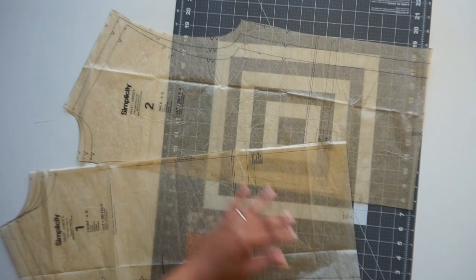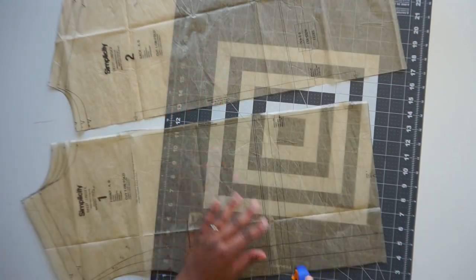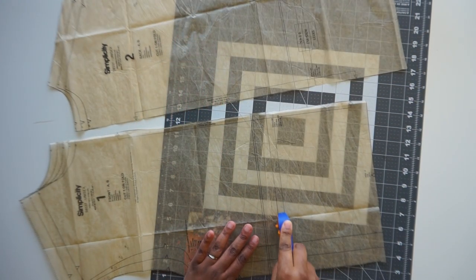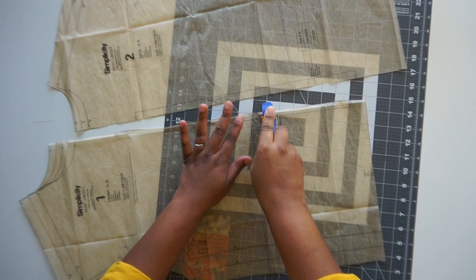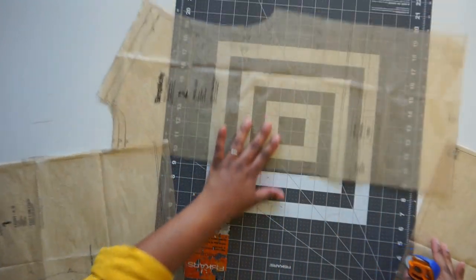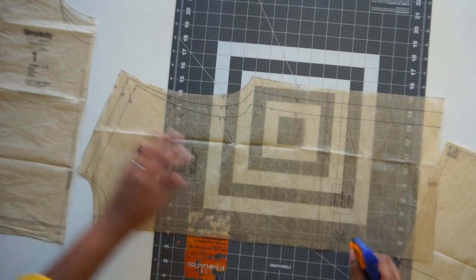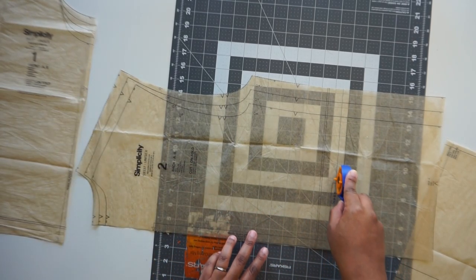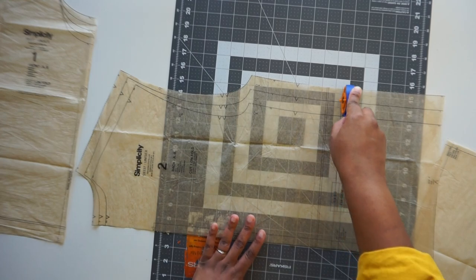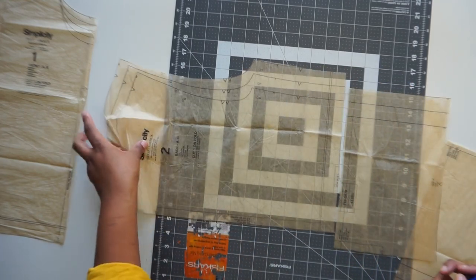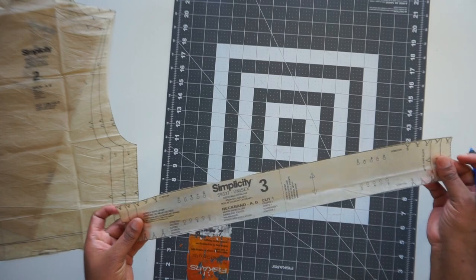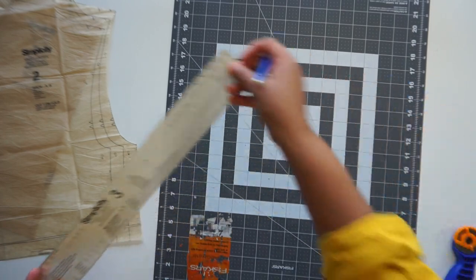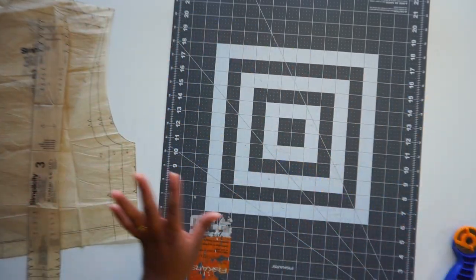Alright, now I'm going to get my paper cutter, I'm going to go ahead and cut along that line. I probably will give these a good press before I actually lay them on my fabric to cut them out because they're wrinkled pretty seriously. We're not going to do anything to the neckband, we're going to leave that as is so we can go ahead and set that aside.